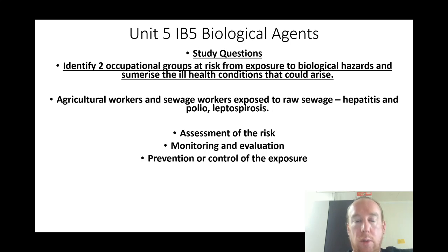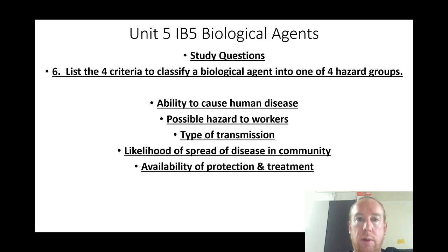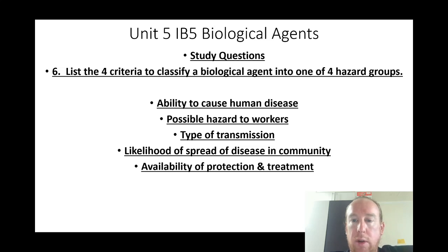List four criteria to classify a biological agent into one of four hazardous groups: ability to cause human diseases; possible hazard to workers; types of transmission and likelihood of spread of disease in the community; and availability of protection and treatment.